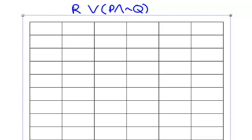This statement contains three variables, so my truth table will have eight rows. First, I need to assign truth values to P, Q, and R.